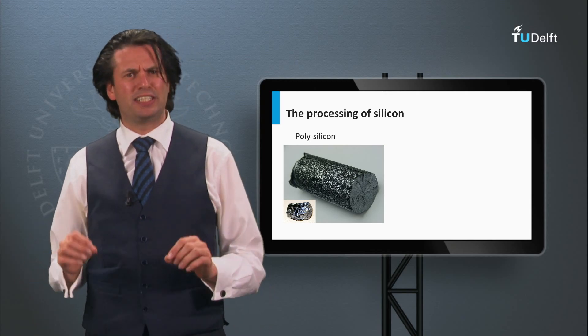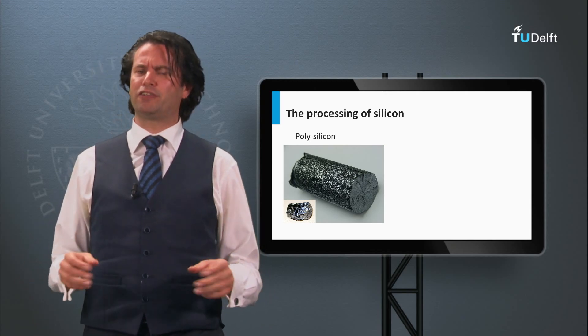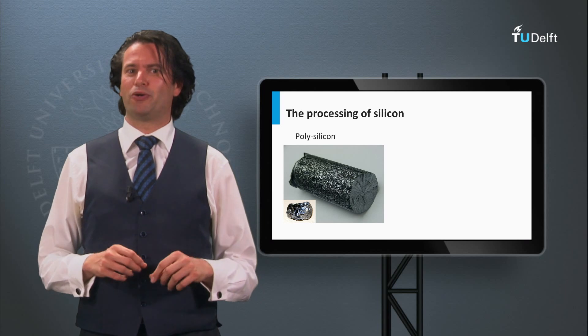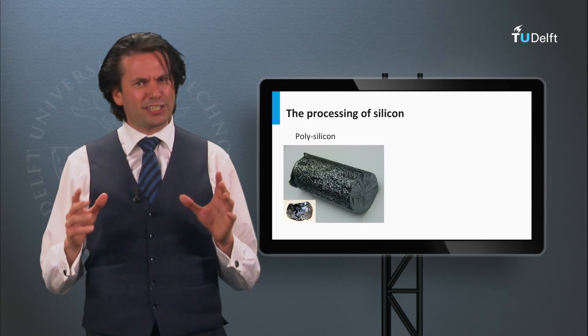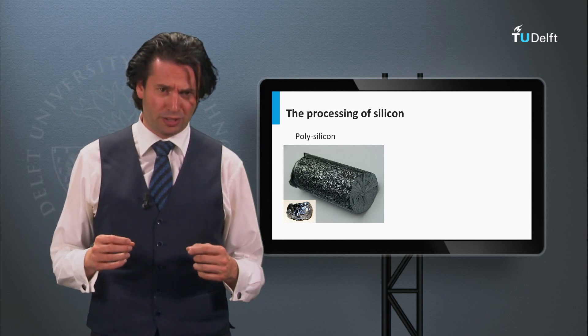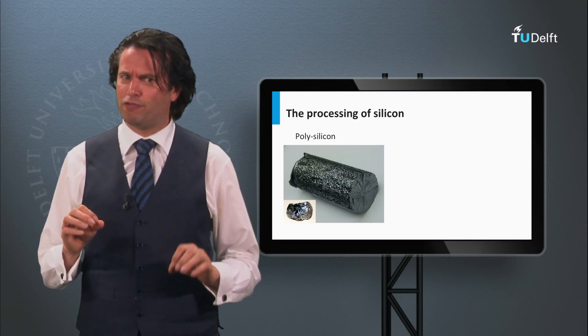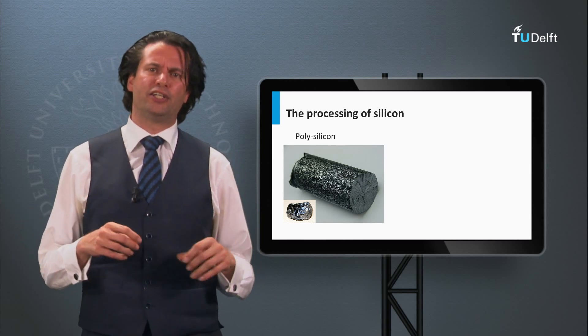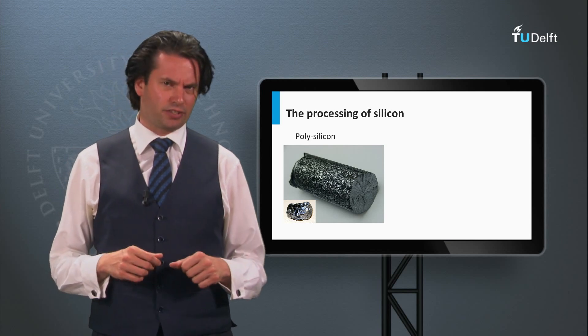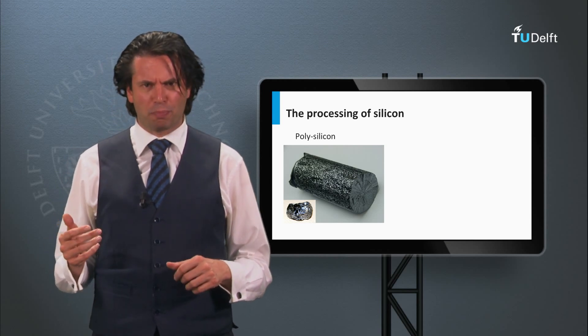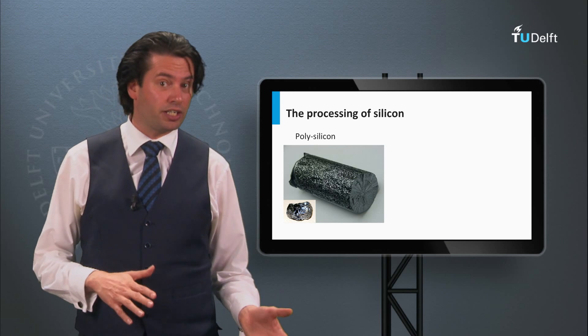In the animation we have seen a chemical vapor deposition furnace that leads to polysilicon rods. This is the so-called Siemens process and consumes a lot of energy. Another method is the production of polysilicon granules in the so-called fluid bath reactors. This process operates at lower temperatures and consumes much less energy.